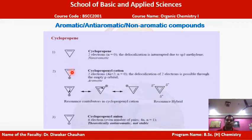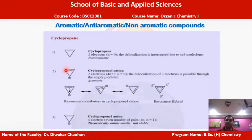Cyclopropenyl cation also has one pi bond giving two pi electrons, and applying 4n+2 gives n=0, an integer value. The positive charge at one corner of the cyclic ring allows delocalization of pi electrons throughout the ring, creating a continuous pi electron cloud. Therefore, cyclopropenyl cation is aromatic in nature.